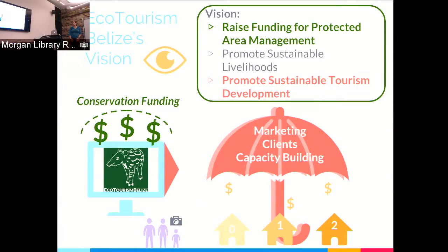The vision behind Ecotourism Belize is threefold: raise funding for protected area management, promote sustainable livelihoods to reduce agricultural pressure on protected areas, and promote sustainable tourism development. As a website, it allows people to book tours in communities that otherwise have no way to market themselves — no electricity, no internet, only a roadside sign. Using Yashay's name and network, communities can receive more clients. Yashay provides marketing and capacity building, charges a higher price, and directs profits to conservation.